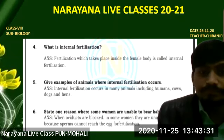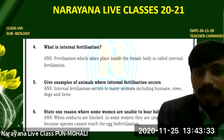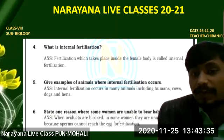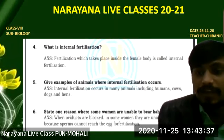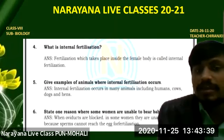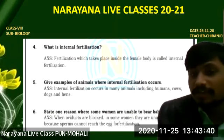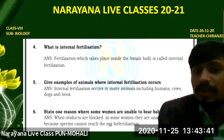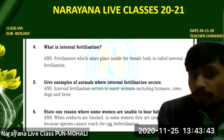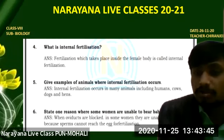Next: a few examples of animals where internal fertilization occurs. Internal fertilization occurs in many animals including humans, cows, and dogs.